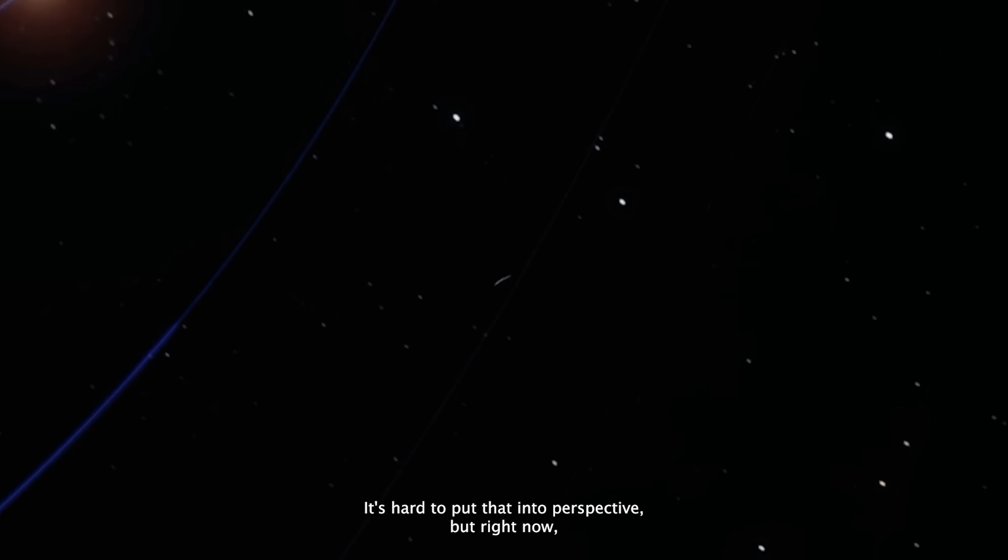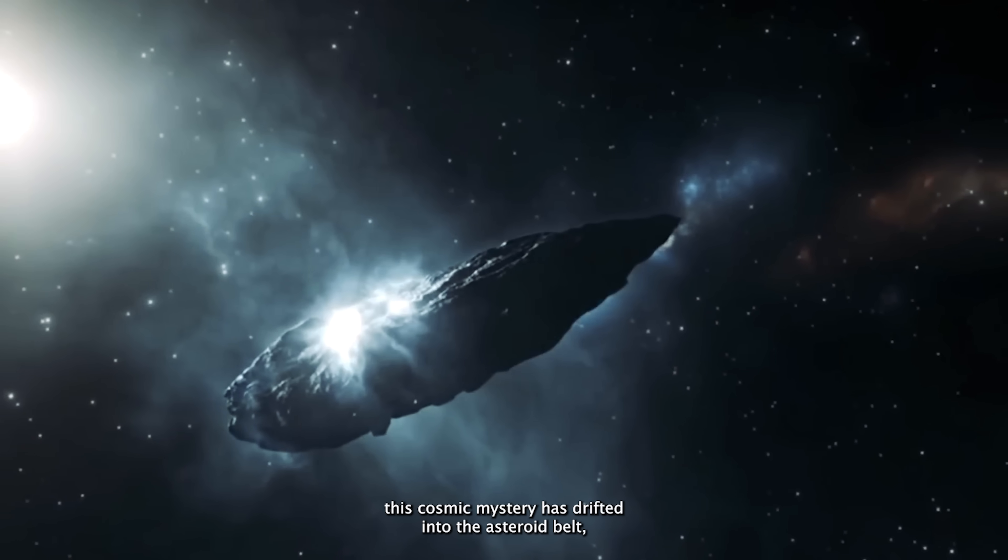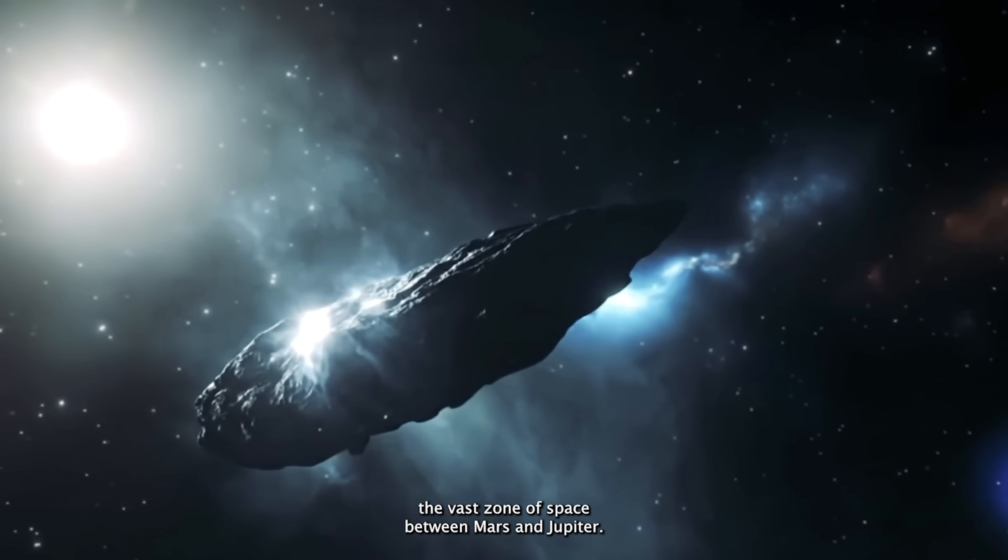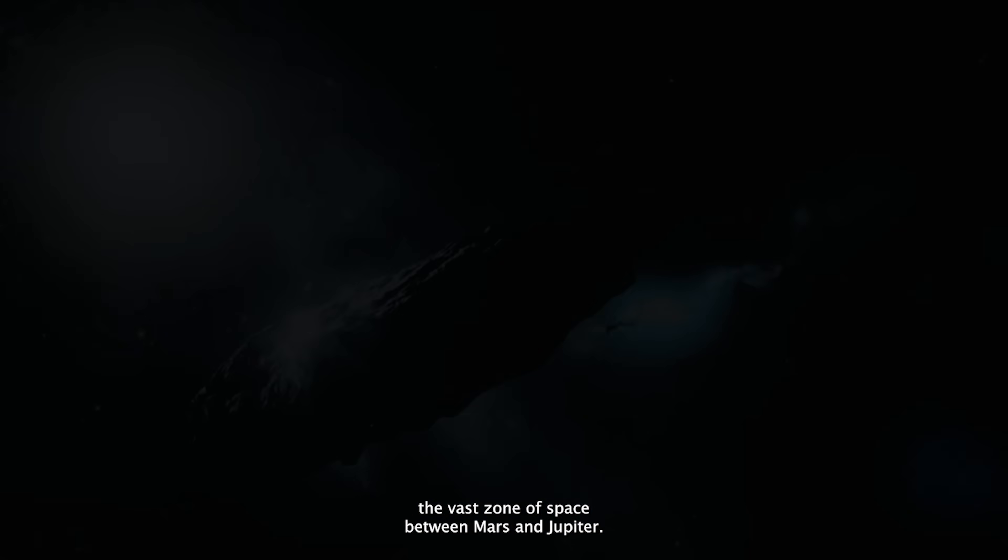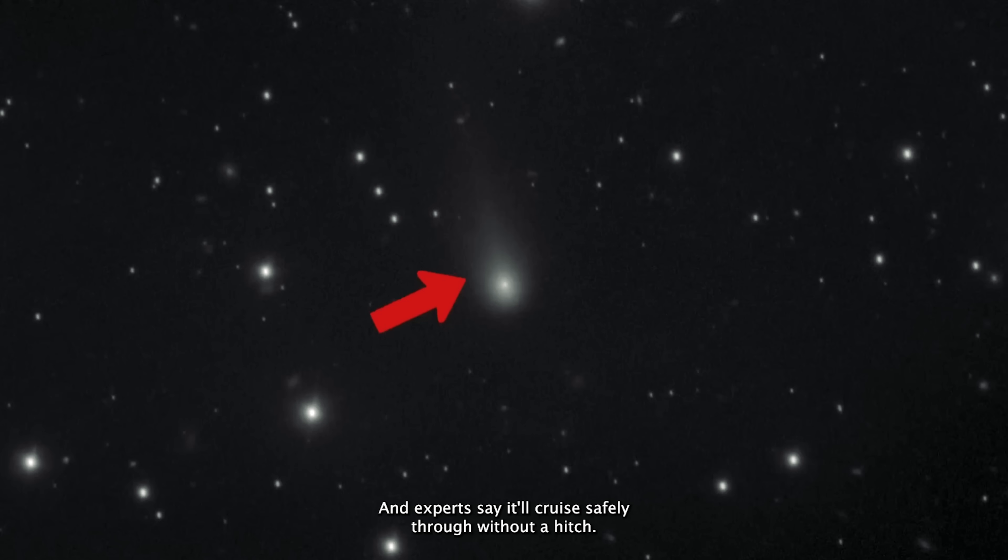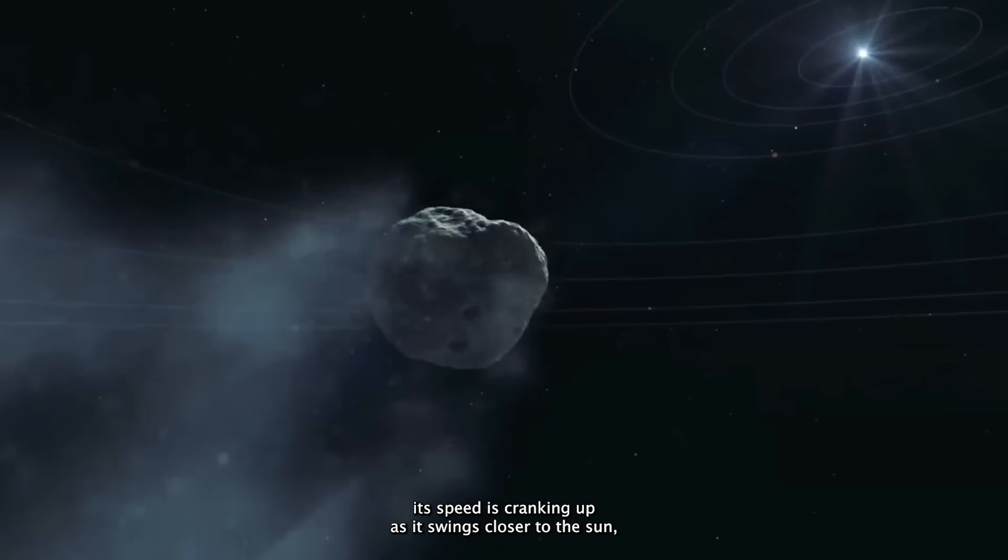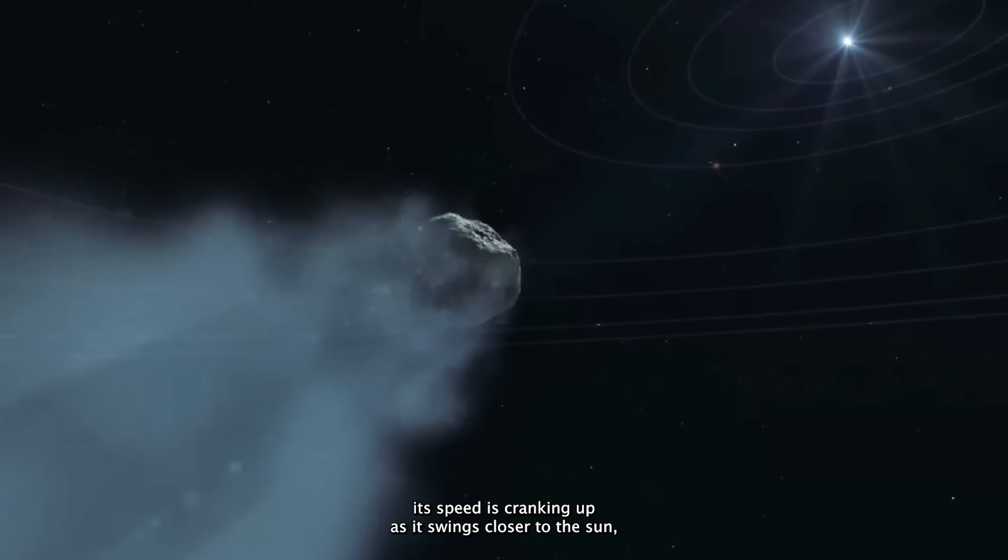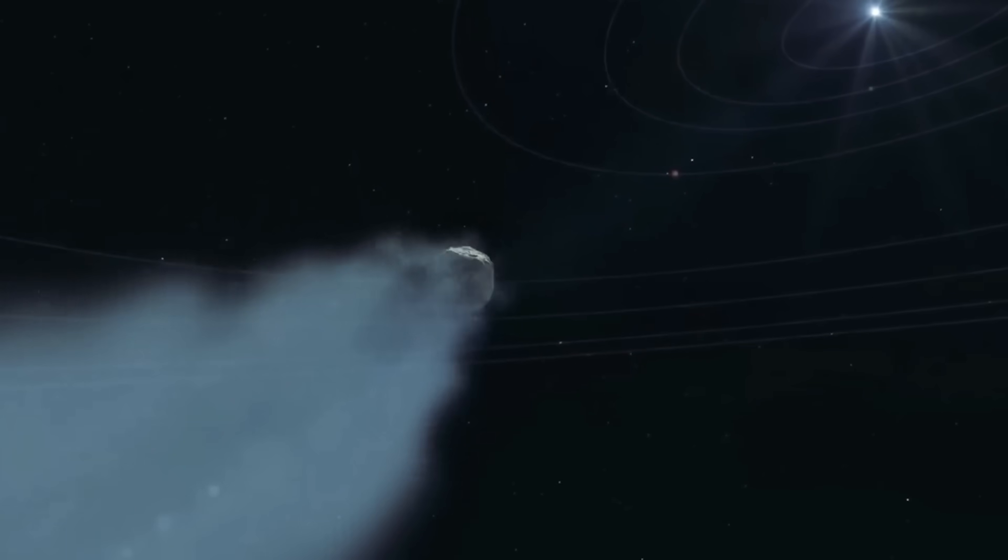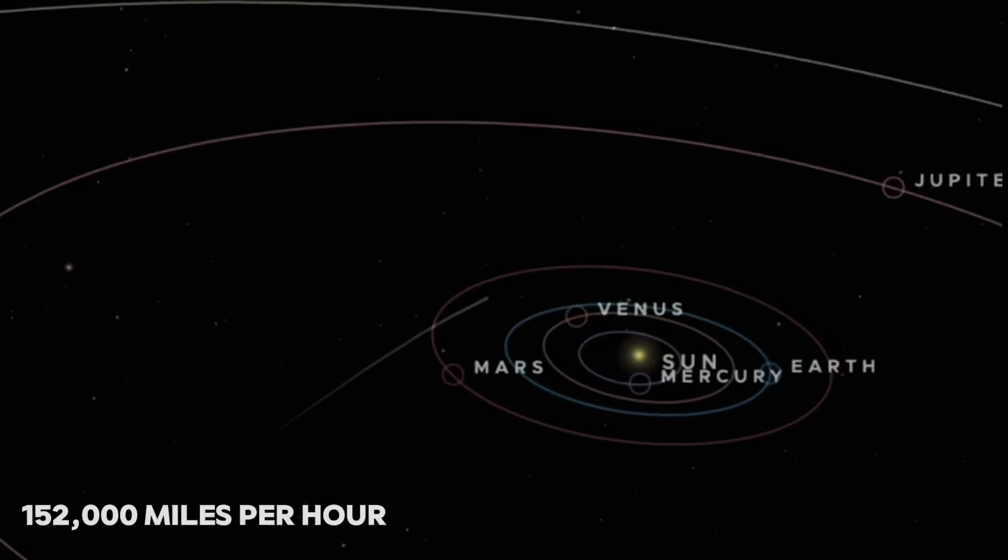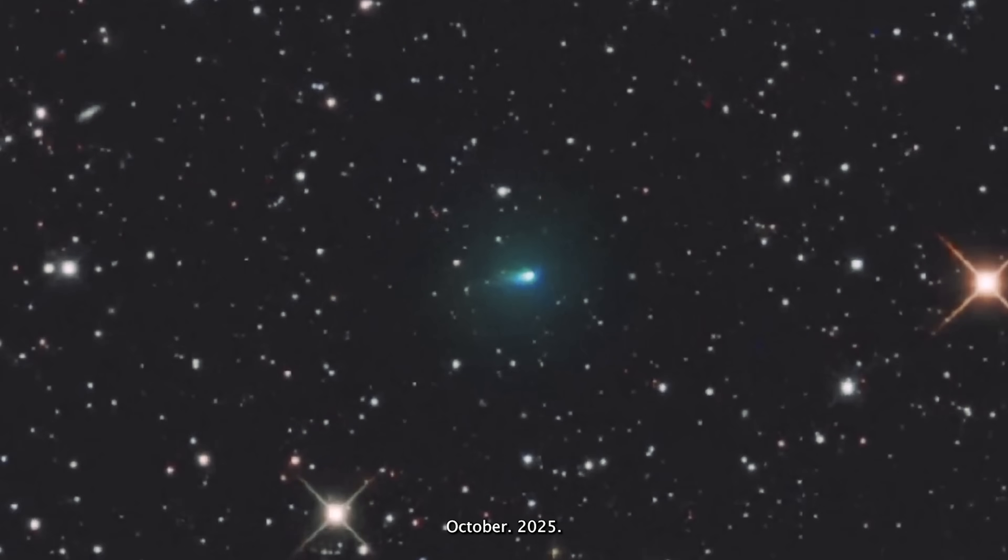It's hard to put that into perspective, but right now, this cosmic mystery has drifted into the asteroid belt, the vast zone of space between Mars and Jupiter, and experts say it'll cruise safely through without a hitch. Just like a comet on a mission, its speed is cranking up as it swings closer to the sun, projected to reach a blistering 152,000 miles per hour by late October 2025.